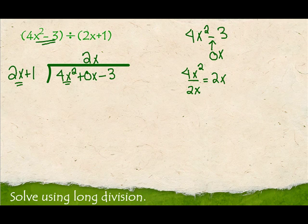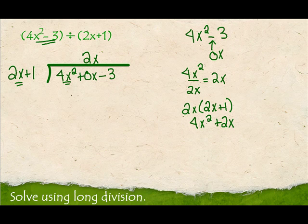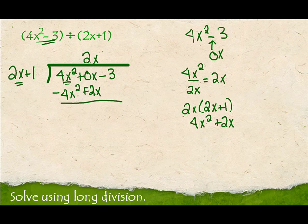I distribute the 2x through 2x plus 1. 2x times 2x is 4x², and 2x times 1 is 2x, giving 4x² plus 2x underneath. If I didn't have the 0x placeholder, I couldn't subtract because the terms wouldn't be like terms — that's why I need 0x here. So I change my signs and add down: 4x² minus 4x² is 0, and 0x minus 2x is negative 2x. Then I bring down negative 3 and start all over.